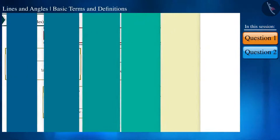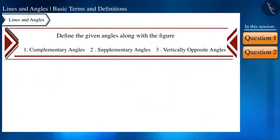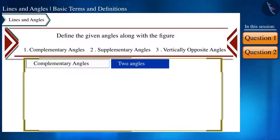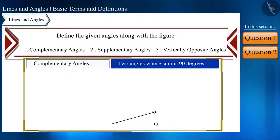Let's move ahead and see the second question. Define the given angles along with the figure. First of all, complementary angles whose definition is like this: If the sum of two angles is 90 degrees, then we call such angles as complementary angles.